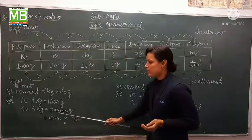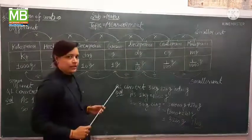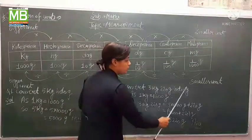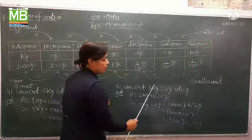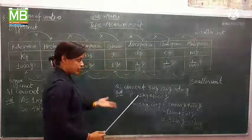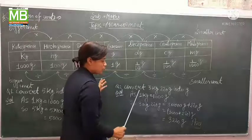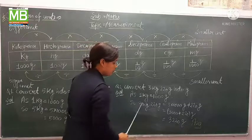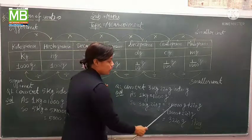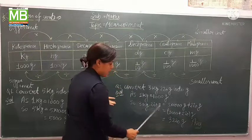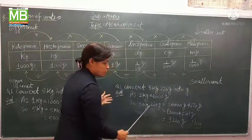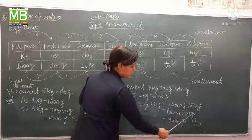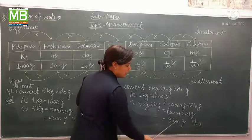Next question: convert 3 kilogram 220 gram into gram. Again, kilogram to gram, we multiply. 1 kilogram equals 1000 gram. For 3 kilogram 220 gram, we multiply 3 by 1000 gram, and 220 gram stays as is. 3000 plus 220 gram equals 3220 gram. This is the final answer.